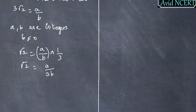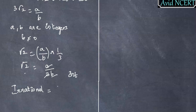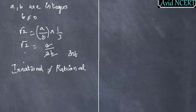We know that √2 is Irrational. On the right-hand side, A, 3, and B are all Integers, which means A by 3B is Rational. But this is not possible — Irrational cannot equal Rational, which means there is a contradiction. So our assumption is incorrect.